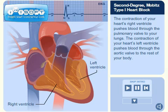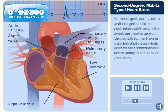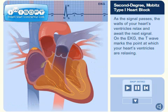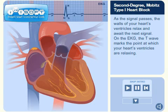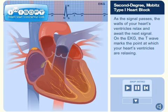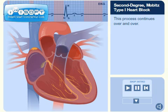The contraction of your heart's right ventricle pushes blood through the pulmonary valve to your lungs. The contraction of your heart's left ventricle pushes blood through the aortic valve to the rest of your body. As the signal passes, the walls of your heart's ventricles relax and await the next signal. On the EKG, the T wave marks the point at which your heart's ventricles are relaxing. This process continues over and over.